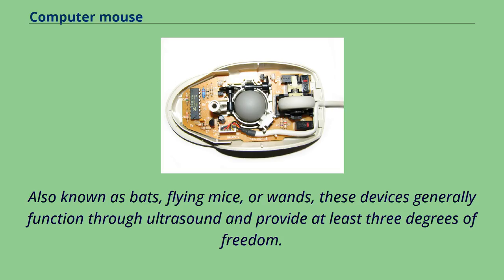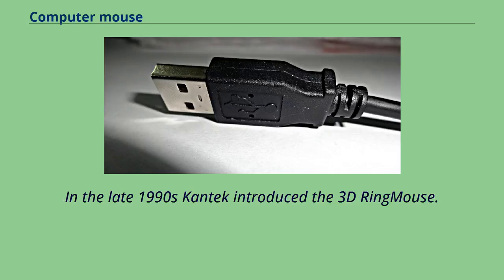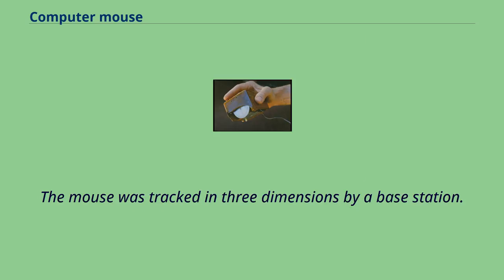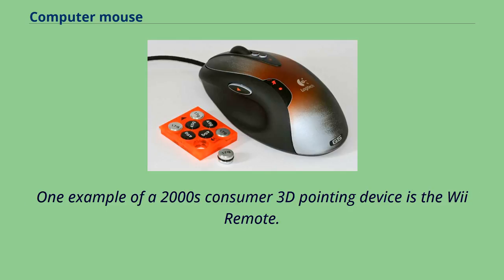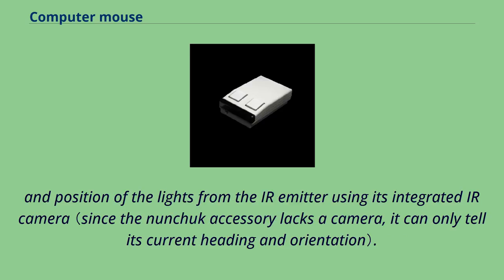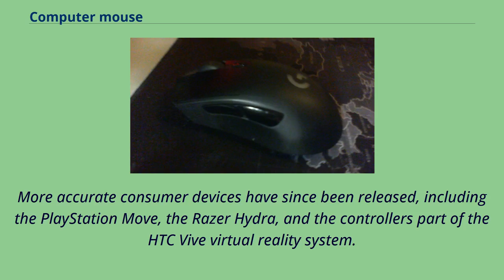Also known as bats, flying mice, or wands, 3D mouse devices generally function through ultrasound and provide at least three degrees of freedom. In the late 1990s, Cantec introduced the 3D ring mouse — worn on a ring around a finger, with thumb access to three buttons, tracked in three dimensions by a base station — but it was discontinued due to insufficient resolution. One example of a 2000s consumer 3D pointing device is the Wii Remote, which can detect spatial position by comparing the distance and position of lights from an IR emitter using its integrated IR camera. More accurate consumer devices followed, including the PlayStation Move, the Razer Hydra, and the controllers for the HTC Vive Virtual Reality System — all capable of accurately detecting position and orientation in 3D space.